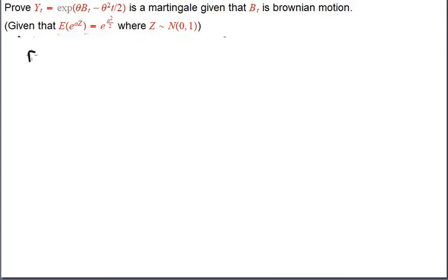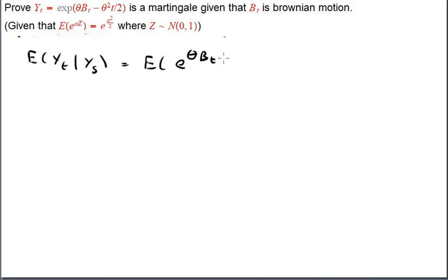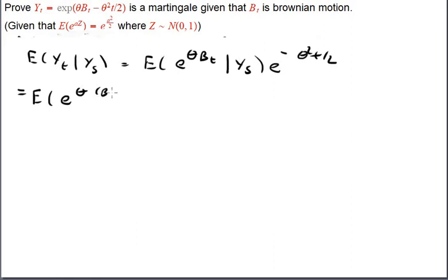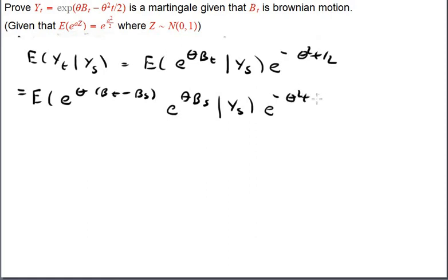Now for the main part: the expected value of Y(t) given Y(s). That equals the expected value of e to θB(t), with e to the minus θ²t over 2 brought out, given Y(s). We use the fact that Brownian motion on disjoint segments is independent, so we rewrite this as e to the θ(B(t) − B(s)) times e to the θB(s), given Y(s), times e to the minus θ²t over 2.